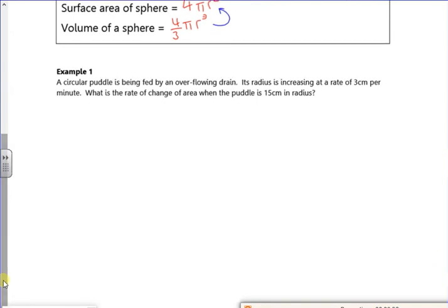A circular puddle is being fed by an overflowing drain. The radius is increasing at a rate of 3 centimeters per minute. Right, this is very definitely one of these, where you write down, what have you got? What do you need? Think about. And then, how do you get there?